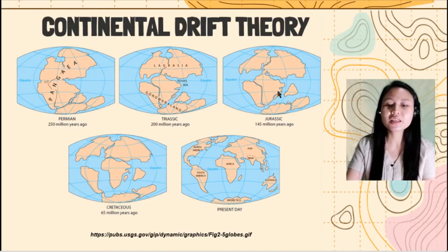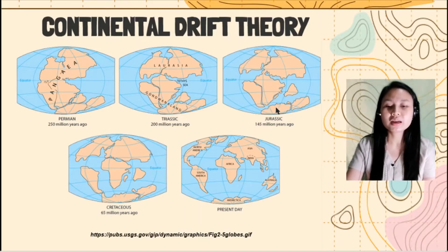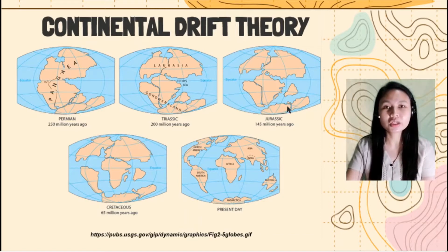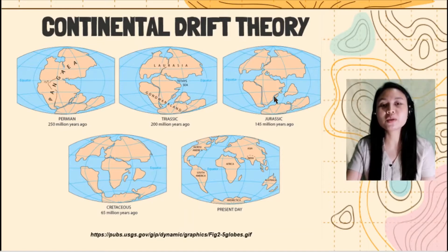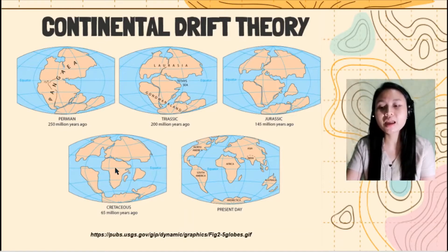Then in the Jurassic period, Laurasia started to drift, and India, Antarctica, and Australia separated from each other during the Jurassic period, or 145 million years ago. Then in the Cretaceous period, South America and Africa started to drift away — that was 65 million years ago.